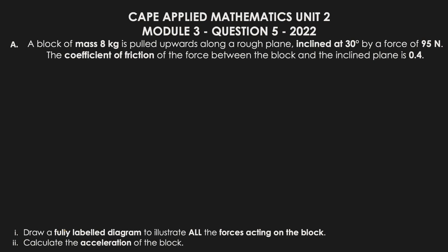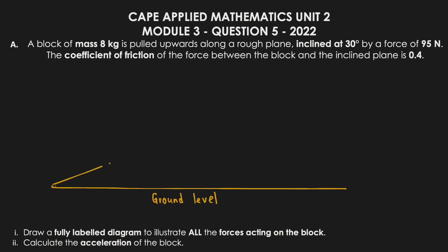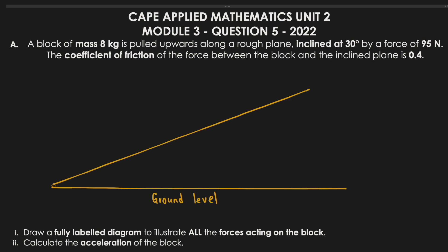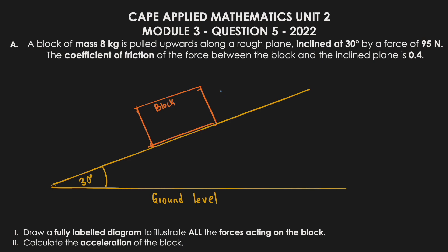The first thing we need to do is draw a fully labeled diagram to illustrate all the forces acting on the block. We start by drawing the incline — ground level at the base — and the block sitting on the incline at 30 degrees. We need to identify all forces acting on this block.